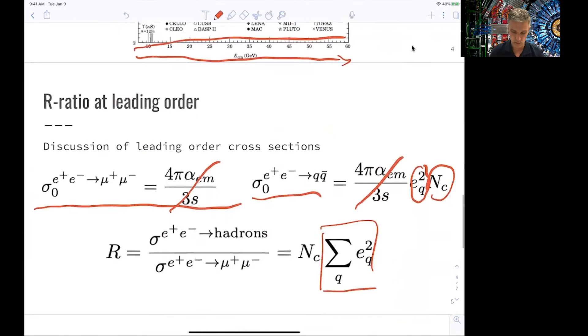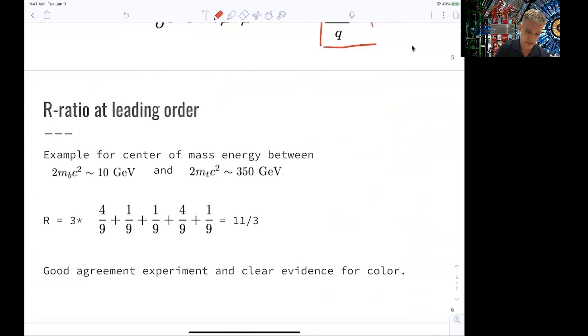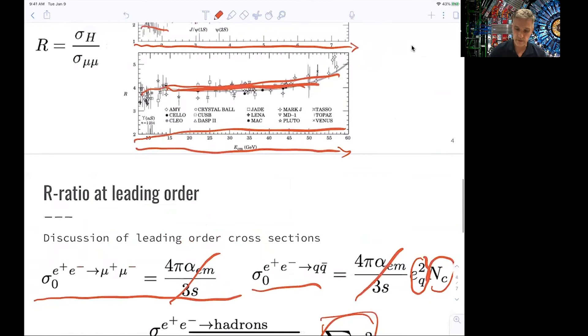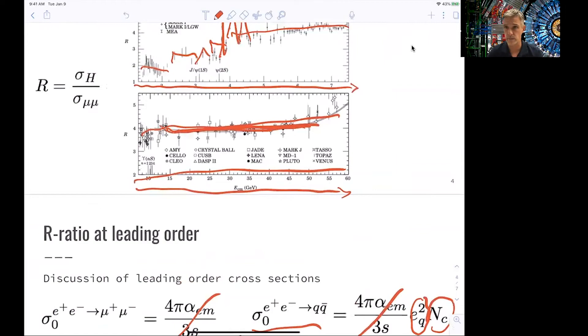What we get from this leading order calculation is three times 4 over 9 for our up quark, 1 over 9 for down, 1 over 9 for strange, 4 over 9 for charm, and 1 over 9 for our bottom quark. So we build the sum here for all quarks which are kinematically available. And as an answer, we get 11 over 3. So this is a very good agreement at leading order, a very good agreement with the experimental results. 11 over 3 is almost 4.